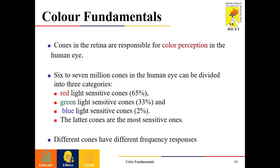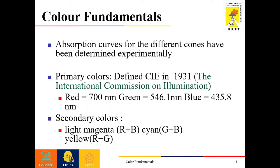The different cones have different frequency responses. The primary colors are defined by the International Commission on Illumination (CIE) in the year 1931: red at approximately 700 nanometers, green at approximately 546.1 nanometers, and blue at 435.8 nanometers. The combination of all these primary colors gives white color.